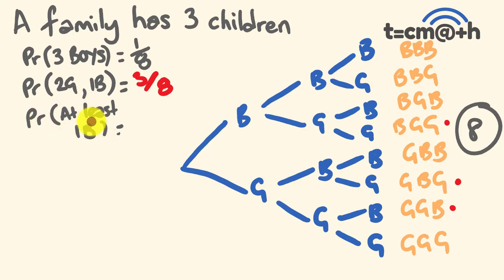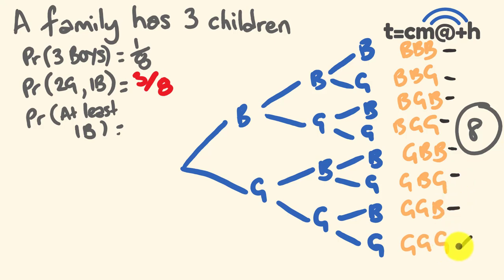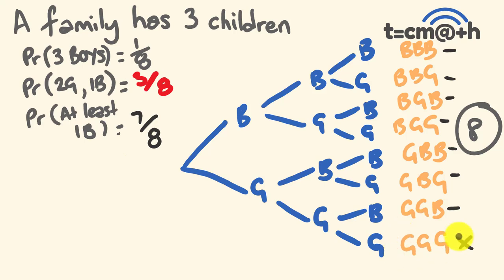What's the probability of getting at least one boy? All outcomes have at least one boy except girl-girl-girl, so we have seven chances out of eight of getting at least one boy, because there's only one outcome where you don't get any boy — that's three girls.